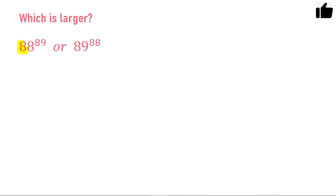Hello friends. In this problem you have been given two numbers and you have to find which number is the greater, larger number. The first number is 88 raised to the power 89, and the second number is 89 raised to the power 88.